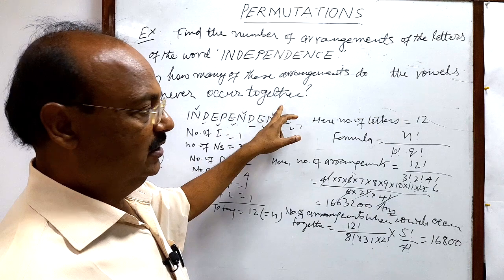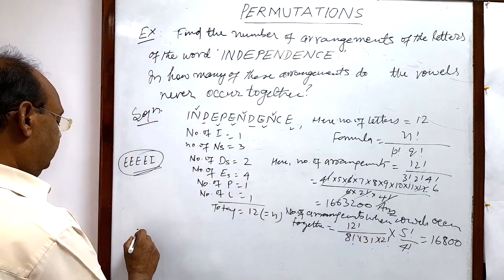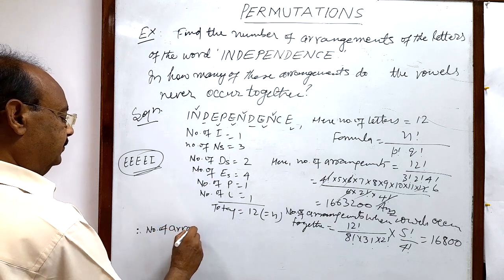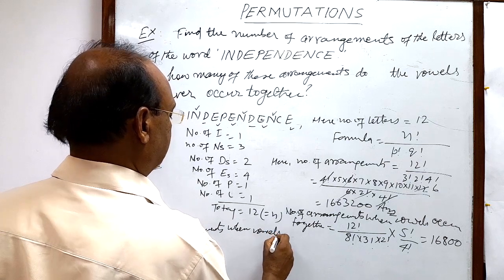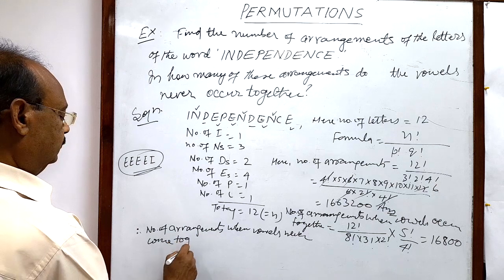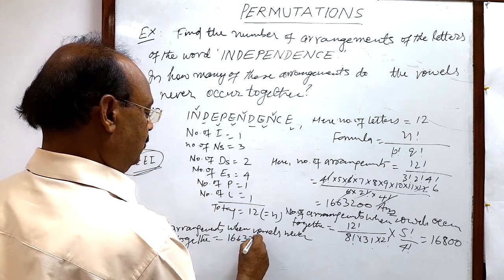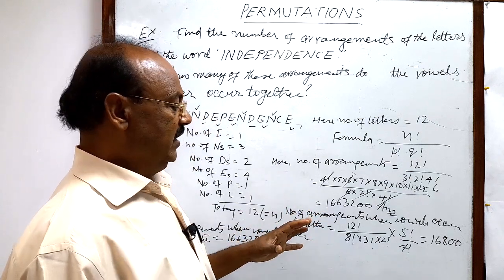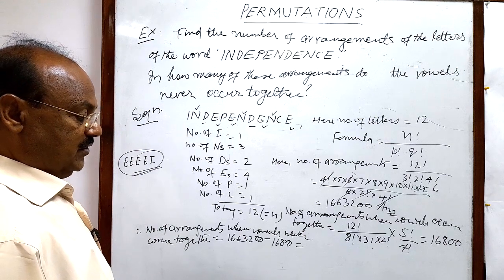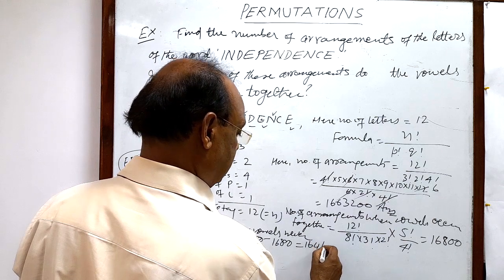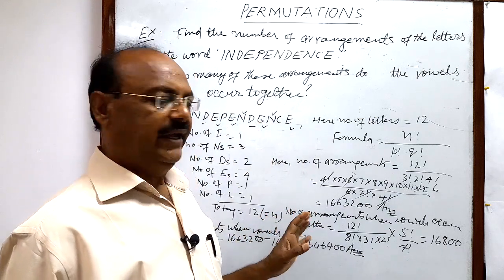When vowels never occur together, we use: total arrangements minus arrangements when vowels come together. Therefore, number of arrangements when vowels never come together equals 16,63,200 minus 16,800, which gives 16,46,400. This is the answer to the second part. The question is a little bit tricky but very interesting and simple. I hope you have understood it well.